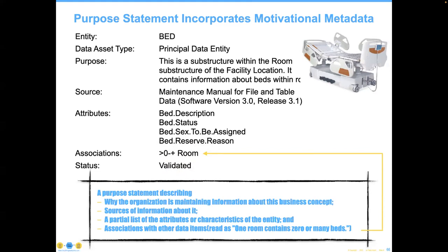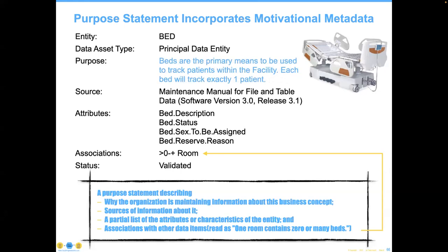Here was a bad definition — and here was a better definition: beds are the primary means to be used to track patients within the facility, each bed will track exactly one patient. But it's still a terrible statement, because the first question that pops up immediately is: where are we going to put the Bed ID attribute? We need to be able to identify this bed from all the other beds. And second, what room is the hallway? What room is the elevator? Those two questions the contractor was unable to answer and consequently unable to implement the entire scheme of keeping track of patients by putting them in beds. Of course, they went to a wristband, which turned out to be a much better way of doing this. The purpose statement in the metadata actually saved the government a fair amount of headache.